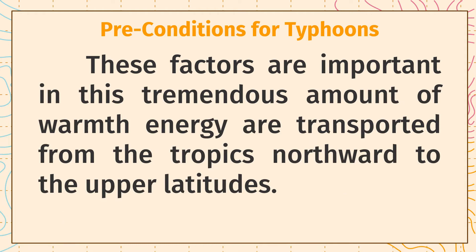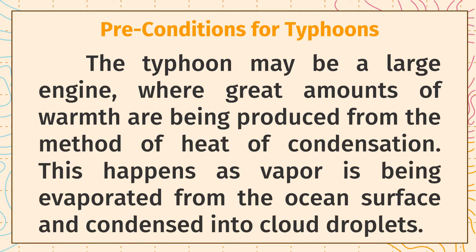These factors are important as a tremendous amount of warm energy is transported from the tropics northward to the upper latitudes. The typhoon may be thought of as a large engine where great amounts of warmth are produced through the process of heat of condensation — this happens as vapor is evaporated from the ocean surface and condensed into cloud droplets.